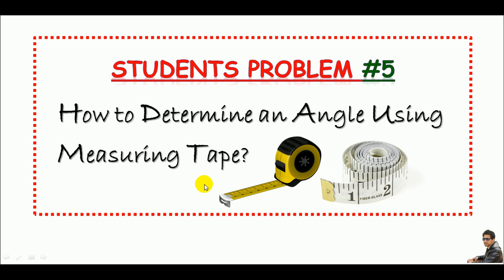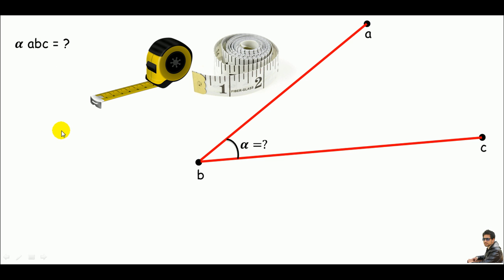Let's see how we determine an angle using measuring tape and a little bit of math. Say if there are three points on earth's surface, like ABC, and they are making an angle ABC. We need to determine angle ABC using measuring tape.